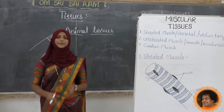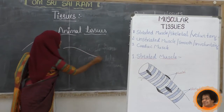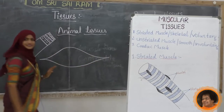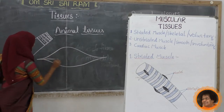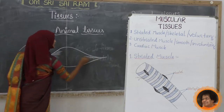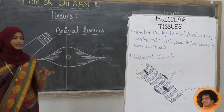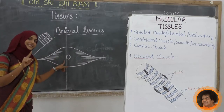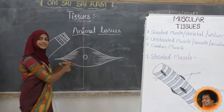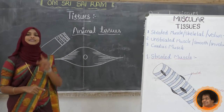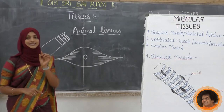Unstriated muscle is not elongated in shape - it is having the spindle shape. I will draw and show you. It has spindle-shaped muscle cells. This is one cell, and a number of cells join together forming the tissue. At the center we can see a nucleus - only one nucleus. While studying striated muscle, we saw it has many nuclei, so we called it multinucleated. But this one has a single nucleus, so it is called uninucleated. Uni means single.